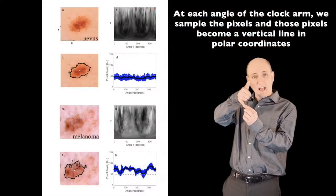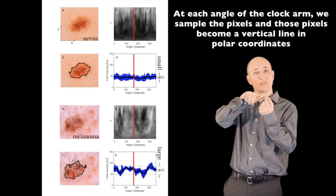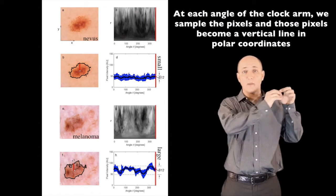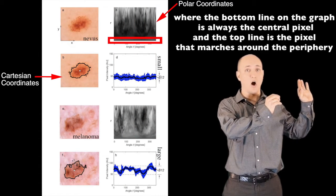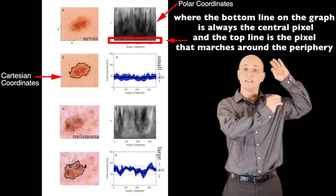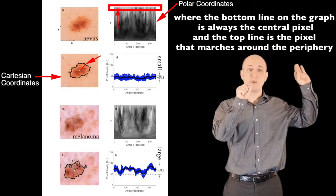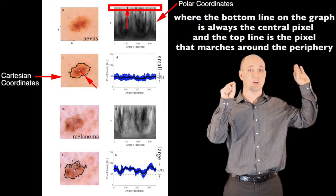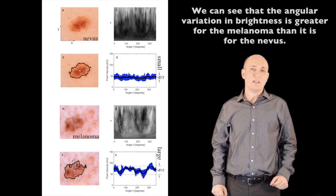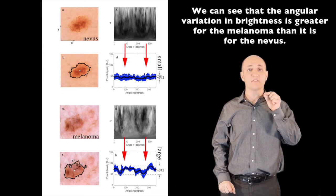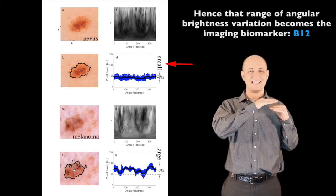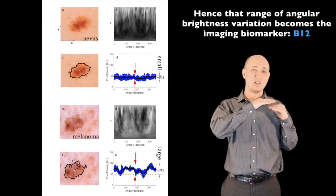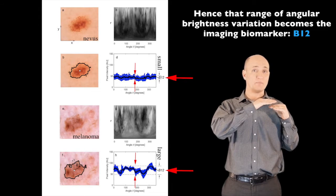At each angle of the clock arm, we sample the pixels, and those pixels become a vertical line in polar coordinates, where the bottom line on the graph is always the central pixel, and the top line is the pixel that marches around the periphery of the Cartesian image. We can see that the angular variation in brightness is greater for the melanoma than it is for the nevus. Hence, that range of angular brightness variation becomes the imaging biomarker B12.